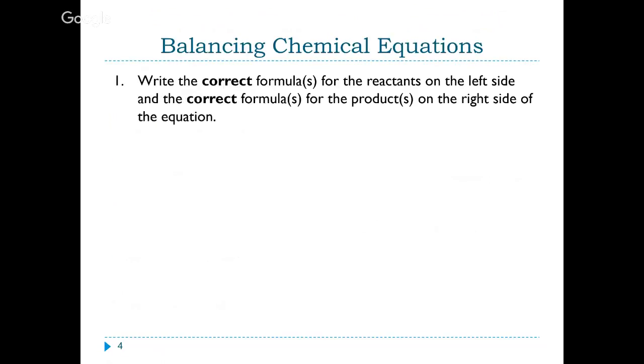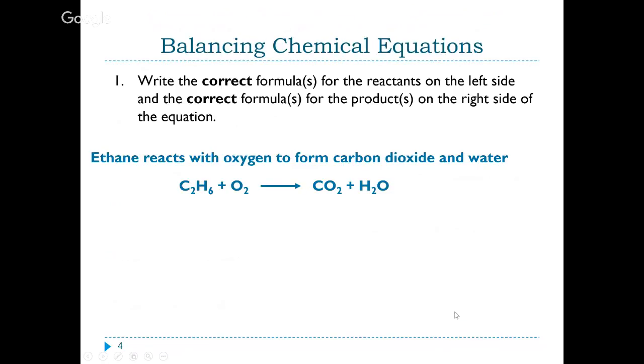So to do this, we make sure that we have a balanced chemical equation. First we start with the correct formulas for the reactants and the correct formulas for the products. Ethane reacts with oxygen to form carbon dioxide and water. We have to know that ethane - eth means two carbons, the ANE ending tells us single bonds, so C2H6. Oxygen is a diatomic element, O2. Carbon dioxide is CO2, and water is H2O. When I look at this equation, we notice we have two carbons to start with, only one to end with. We have two oxygens here, a total of three oxygens on this side. We have six hydrogens, we only have two. So right now this is not the correct equation to represent the reaction.